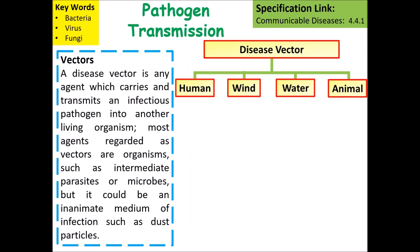The four main types of vectors to consider are human vectors, wind vectors, water vectors and animal vectors.